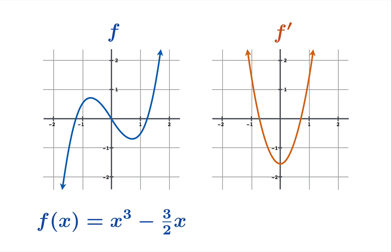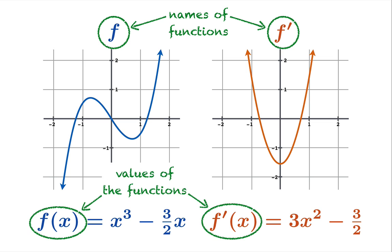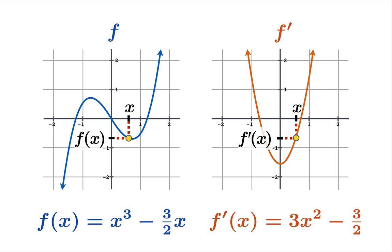In this example, the functions f and f prime happen to have formulas. f of x is a cubic polynomial, f prime of x is a quadratic polynomial. As long as we're talking about notation, we should point out that f and f prime are the names of functions. f of x and f prime of x are actually values that come out of the function once you've put in an argument x. So if we were to take an x somewhere on the axis and plot these points, f of x and f prime of x are the numbers that come out as values of the function.